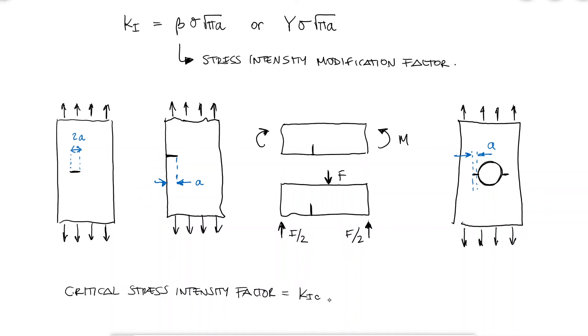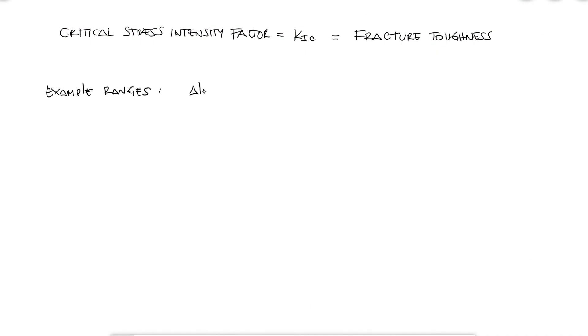This critical stress intensity factor is also known as fracture toughness. And since it's defined as a material property, theoretically you could find its value for an engineering material. Some examples would be aluminum between 26 and 33 MPa square root of m, titanium between 55 and 115, and steels between 14 and 99. But these ranges are just examples.